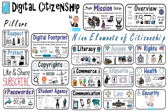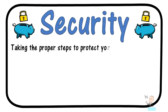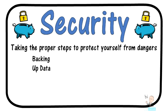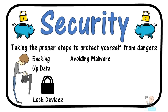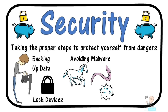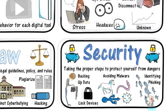And now on to the last of the nine essential elements of digital citizenship, and that is digital security. Security is about taking proper steps to protect yourself from dangers. One of the first security measures you should take is to back up your data — you don't want to lose all your work. Be sure to lock your device when you are away from your computer, especially when using a public computer. Be wary and avoid all types of malware, including trojans, worms, and viruses that can affect your computer. Become wise to online phishing — an attempt or cybercrime where perpetrators try to lure someone into giving up their bank information or other important information.